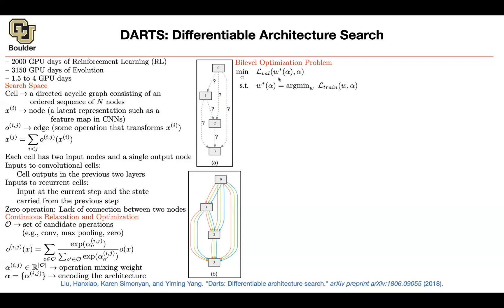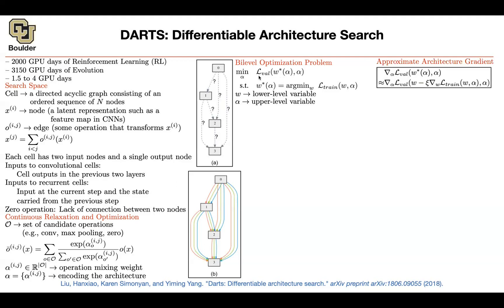Given alpha, you solve for omega. Then you take that omega(alpha), put it in your validation loss, and find the minimizer of that objective — and now you can do gradient descent. Omega are your lower-level parameters and alpha are your upper-level parameters; think of alpha as your hyperparameters. You do approximate gradient descent: you want the gradient of the validation objective with respect to alpha. You first take a step in the direction of optimizing the training loss, then approximate the gradient with that — don't optimize fully, just take one step.